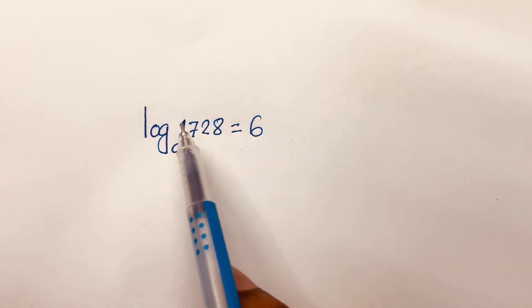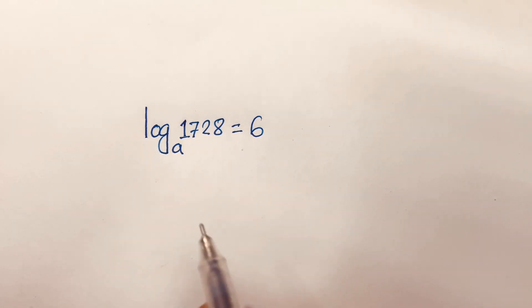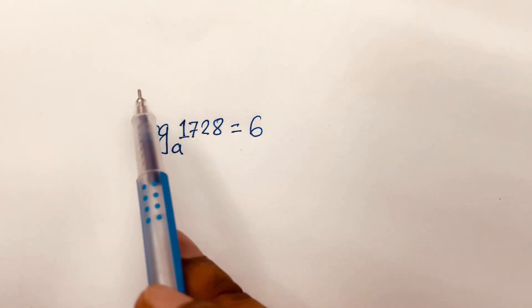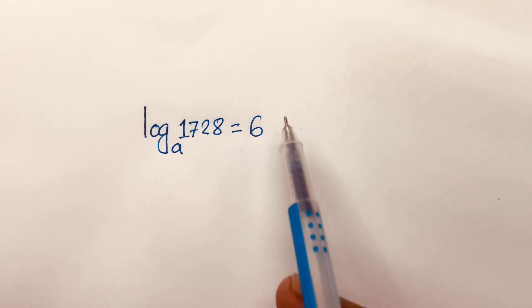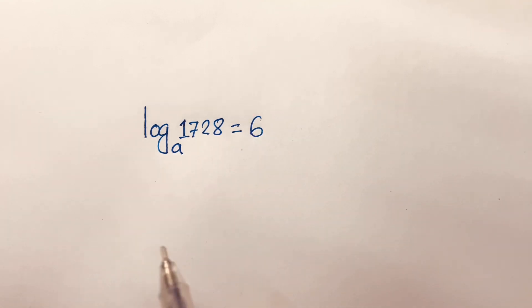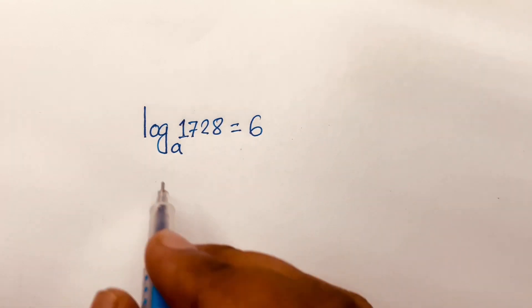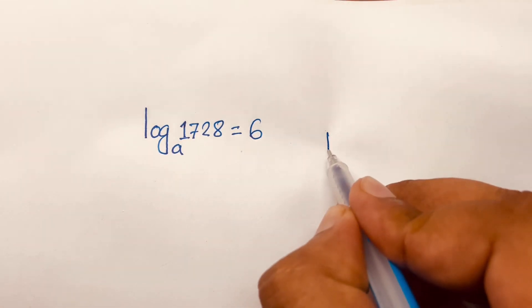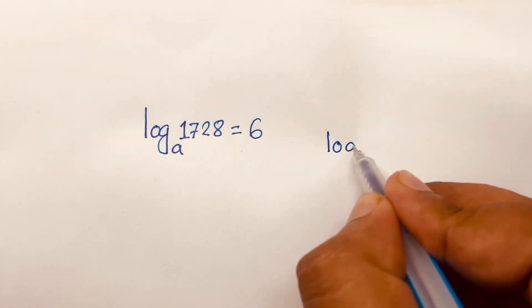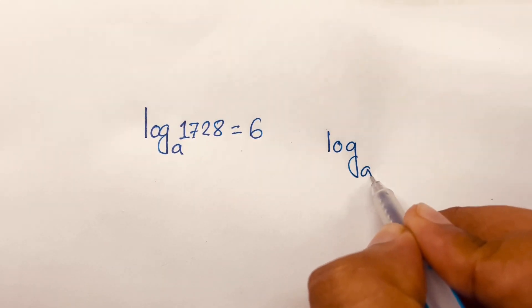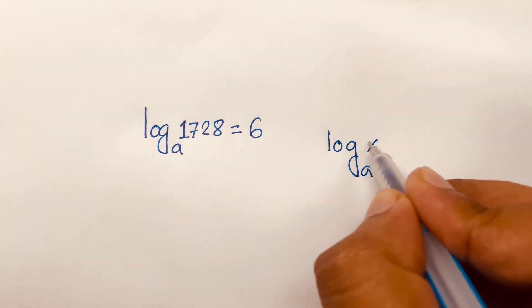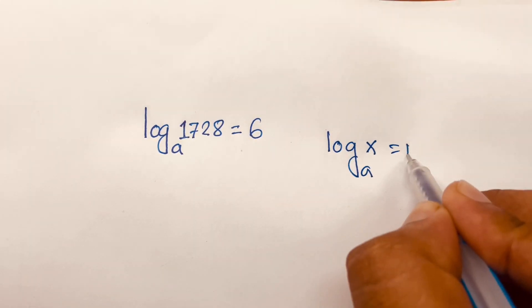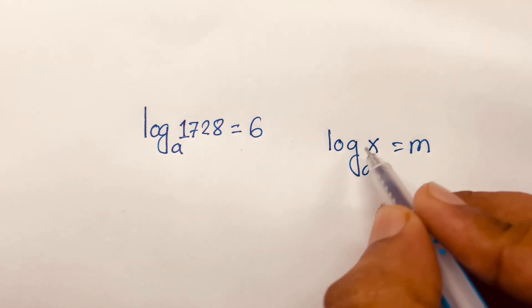To solve log_a(1728) = 6, we'll find out what is the value of a. First of all, we know that log_a(x) = m means a to the power m is equal to x.